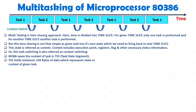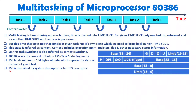When you jump from one task to another task, that state is loaded into the TSS. The TSS will bring back that task again when you jump back to it. You should know that the TSS is described by a system descriptor referred to as the TSS descriptor. The TSS is a segment which holds the state of a task, and to identify it we use the TSS descriptor.